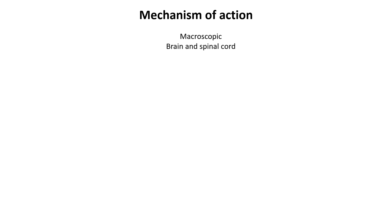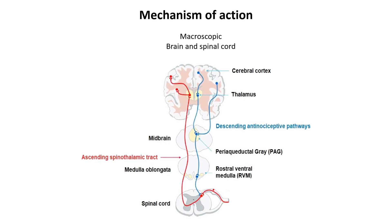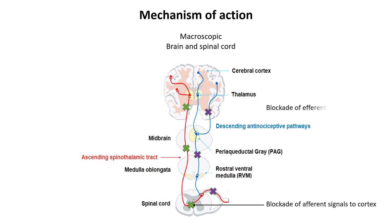At the spinal cord level, inhalation anesthetics decrease transmission of noxious afferent information ascending from the spinal cord to the cerebral cortex via the thalamus. There is also inhibition of spinal efferent neuronal activity, reducing movement response to pain.